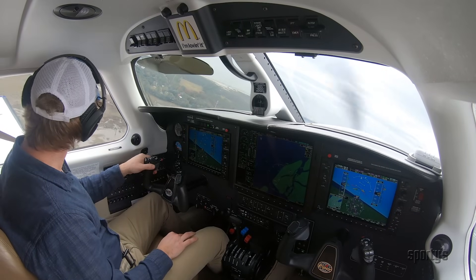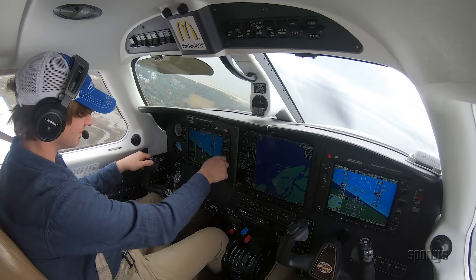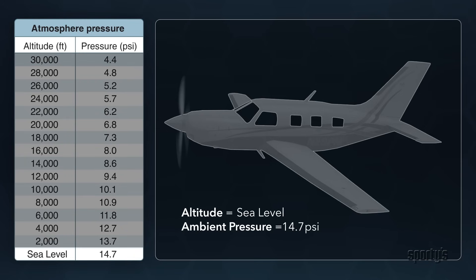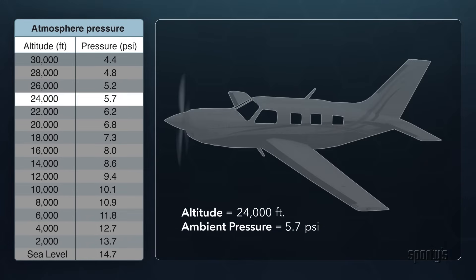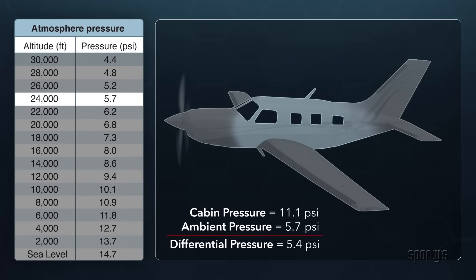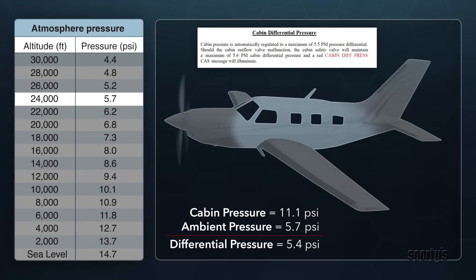Let's look at how a modern pressurization system is operated by the pilot, using the Piper Malibu as an example. At sea level, the ambient atmospheric pressure is approximately 14.7 PSI. Climb up to 24,000 feet and the ambient pressure drops to 5.7 PSI. The goal of the pressurization system is to increase the cabin pressure to a higher value than ambient when flying at higher altitudes, so that the occupants feel as if they were at a lower altitude. The difference between the ambient pressure and cabin pressure is called differential pressure. Every pressurized airplane is certified with a maximum allowable differential pressure. For the Malibu, the maximum differential pressure is 5.5 PSI.